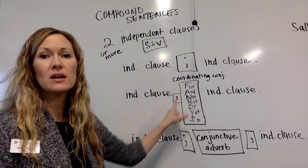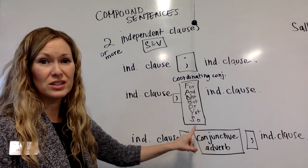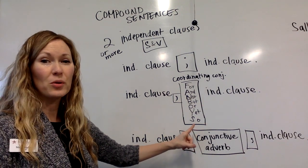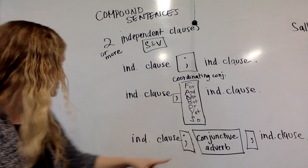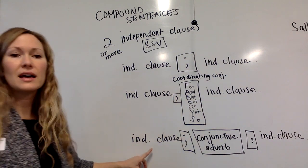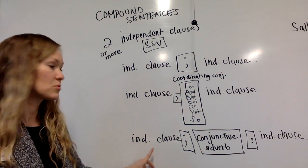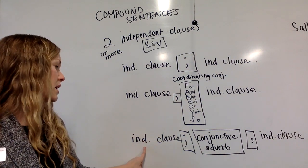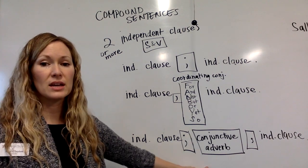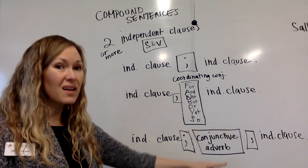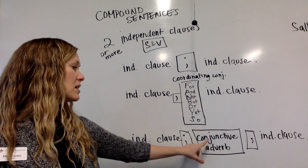The pattern is: independent clause, comma, one of the FANBOYS coordinating conjunctions — for, and, nor, but, or, yet, so — and another independent clause. The last way to identify compound sentences is through an independent clause, a semicolon, and a conjunctive adverb with a comma, and then another independent clause.